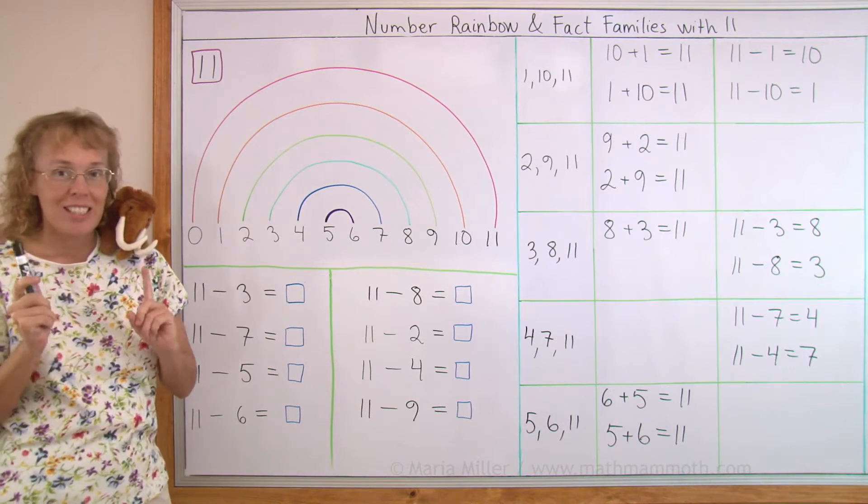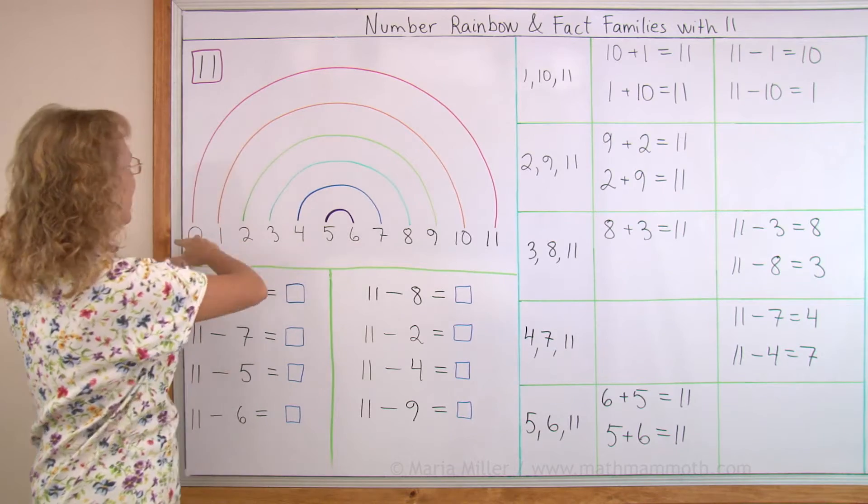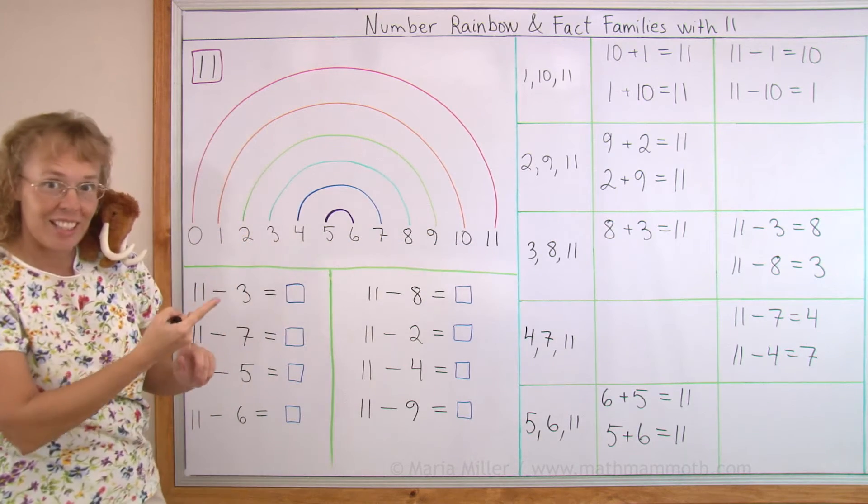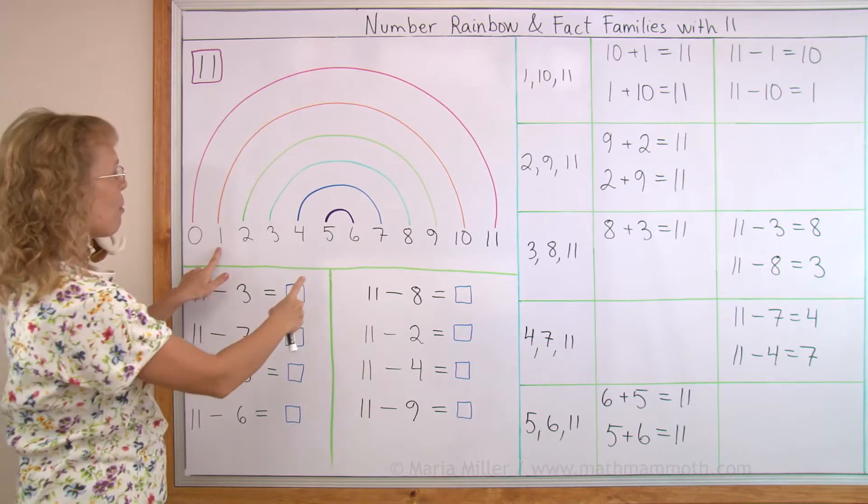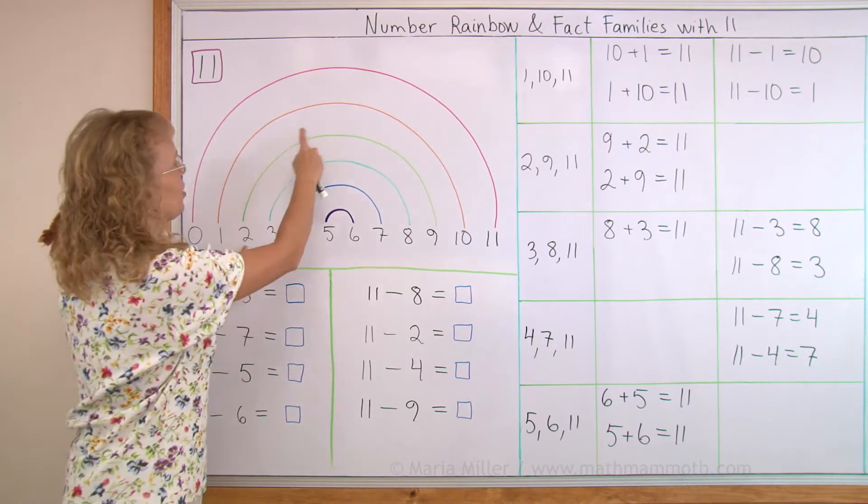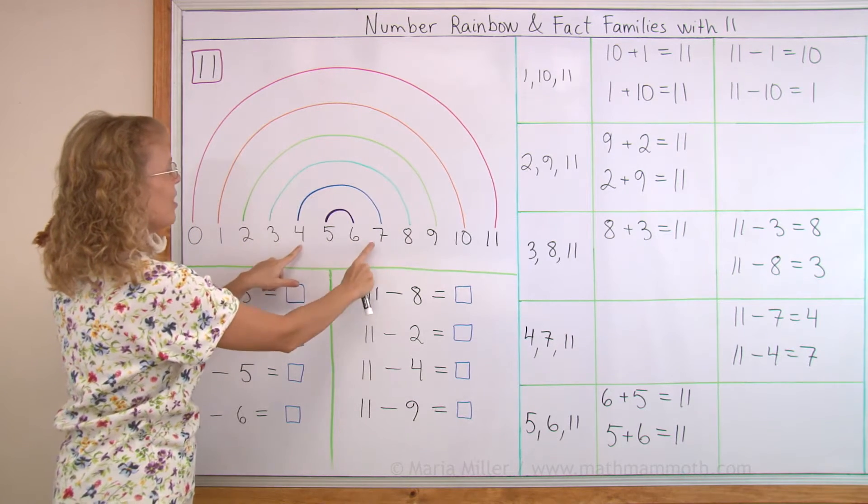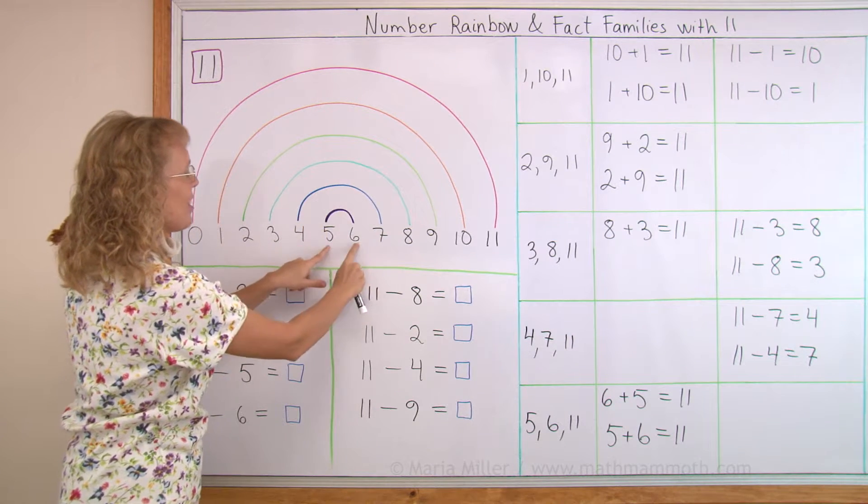And it works this way. Two numbers are connected with an arc if they add up to 11. So 0 and 11 is 11, right? Then 1 and 10 also make 11. 2 and 9 and then 3 and 8, 4 and 7 and then 5 and 6.